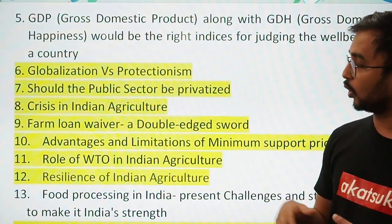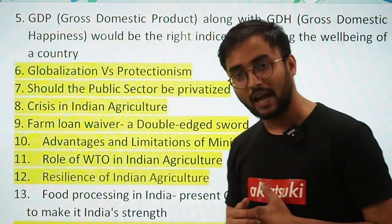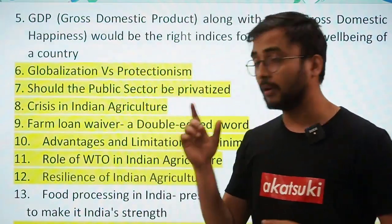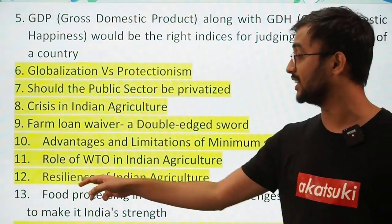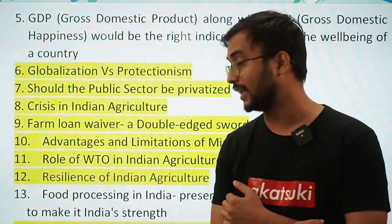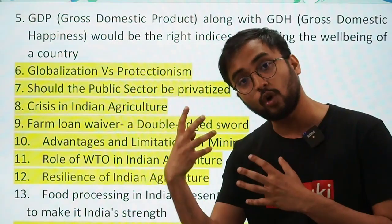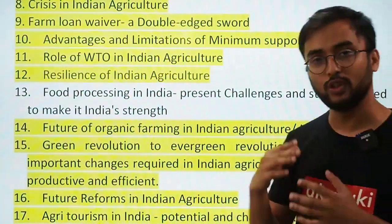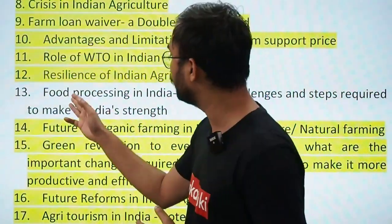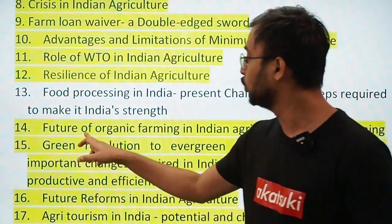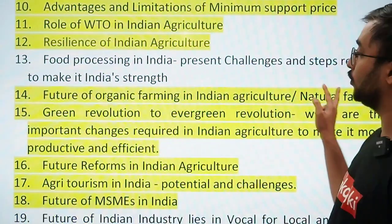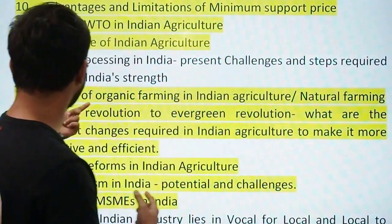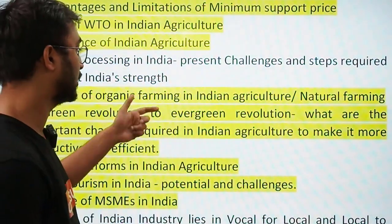Food processing in India, food security, nutritional security — all very important areas. Future of organic farming or natural farming in Indian agriculture — as discussed in our themes. From green revolution to evergreen revolution: what changes are required in Indian agriculture to make it more productive and efficient? The question is no longer about advantages/disadvantages of the green revolution but rather: do we need a green revolution 2.0 or an evergreen revolution?